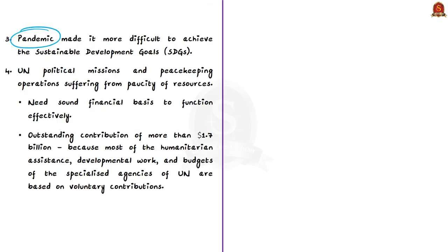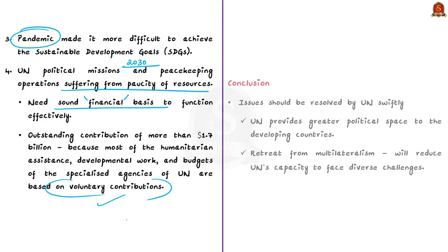The pandemic has made it more difficult to achieve the Sustainable Development Goals adopted by the UN, which may need to revisit or extend the target period. UN political missions and peacekeeping operations are suffering from scarcity of resources, with outstanding unpaid contributions of more than US$1.7 billion. Most humanitarian assistance, developmental work, and budgets of specialized UN agencies are based on voluntary contributions, so the UN must find resources to fund these missions. These are some of the key issues listed by the author.